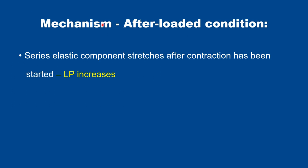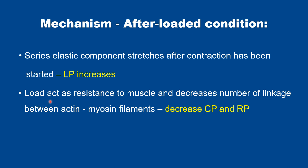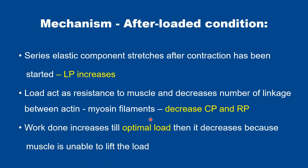In afterloaded condition, the series elastic component stretches after the contraction has started. So there is cross-linking between actin and myosin filaments beginning, then it is being stretched. Because of this, the latent period increases, since latent period is due to the series elastic component element. When we hang and increase the load in this condition, the load acts as resistance to the muscle and decreases the number of linkages between actin and myosin filaments. Because of this, it decreases the contraction period and relaxation period. Hence, work done increases till optimum load, then decreases because the muscle is unable to lift the load.